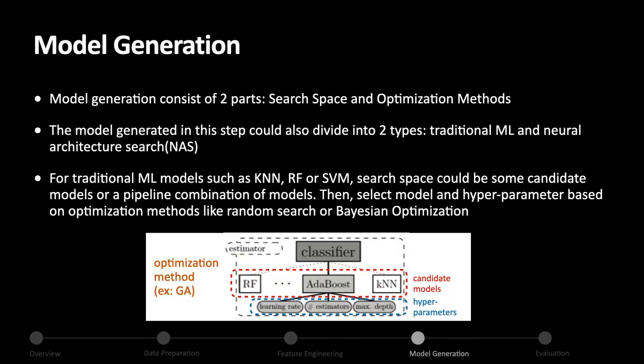Model generation consists of two parts: search space and optimization method. The model generated in this step can be divided into two types: traditional machine learning models and neural architecture search. For traditional ML models such as KNN, Random Forest, or SVM, the search space could be candidate models or a pipeline combination of models. Then we select the model and hyperparameters based on optimization methods like random search or Bayesian optimization.